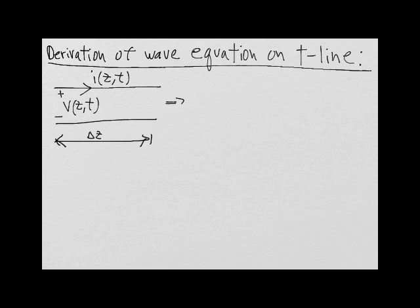Now this transmission line section can be represented by a circuit model consisting of a series resistance R delta z, a series inductance L delta z, a shunt resistance G delta z, and a shunt capacitance C delta z.